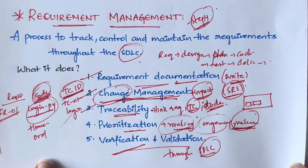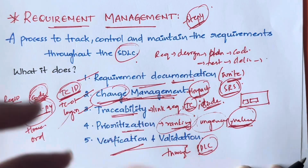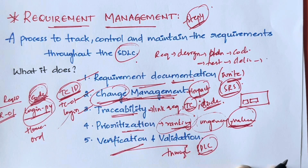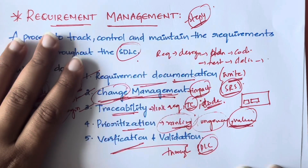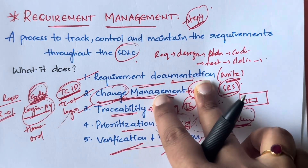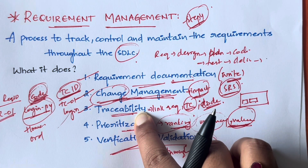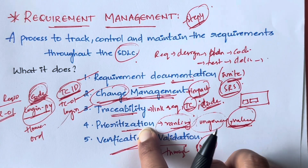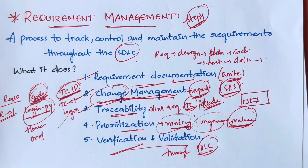So this is about requirement management — a short and simple topic. It is the last step in the requirement engineering process. It is a process where you control and maintain all requirements throughout the software development life cycle, from the start of the project until delivery and maintenance. It helps you document requirements, track changes, maintain traceability, prioritize requirements, and continuously verify and validate them.